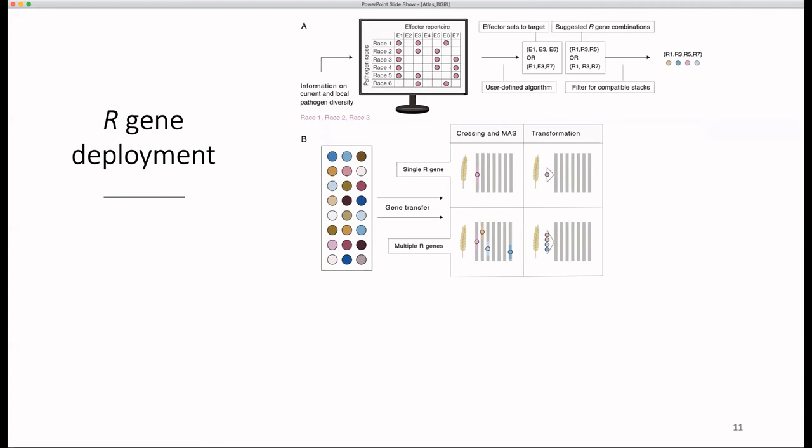Crossing is also limited to species that are sexually compatible with wheat, which may rule out some wild grasses. Transformation on the other hand would allow all genes to be introduced at a single locus and prevent the separation of genes, making them easier to track in breeding programs.